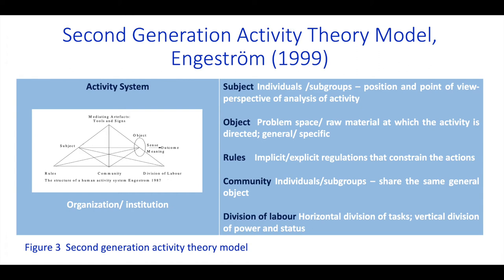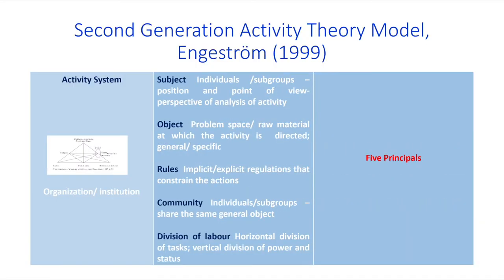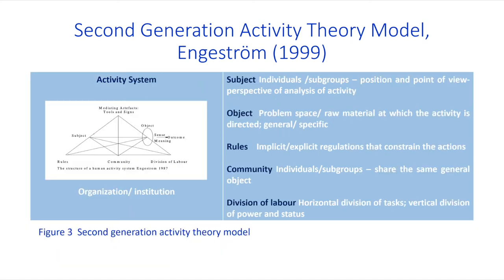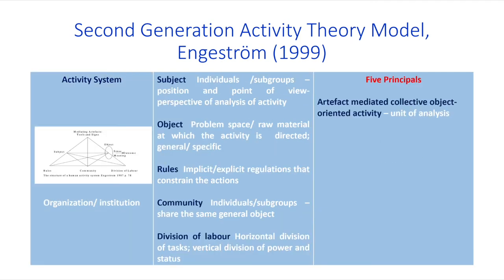The entire activity system can be summarized on the basis of five principles, some of which have already been explained when describing the components. The first principle involves artifact-mediated, collective, object-oriented activity, which becomes the prime unit of analysis in second generation Activity Theory. Individual goals and underlying operations can be understood against the backdrop of the entire activity system.